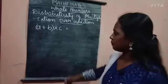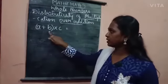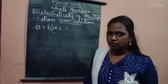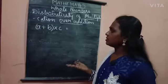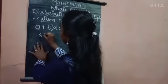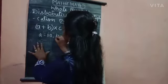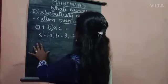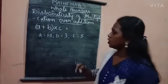I will show you by example. Here you have A plus B into C. So let us keep A as 10, B is equal to 3 and C is equal to 5.